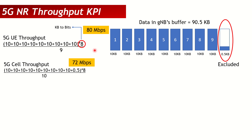For 5G cell throughput, all volume and all time is used — we're not looking at a per-user KPI. So it's all 10 slots: (90 + 0.5) KB × 8 divided by 10ms, giving 72 Mbps. Notice cell throughput is 72 Mbps while UE throughput is 80 Mbps. The reason UE throughput is higher is that the nearly-empty last slot is excluded.